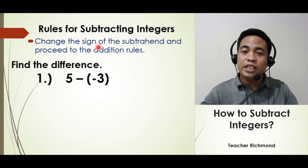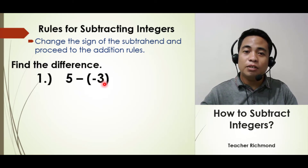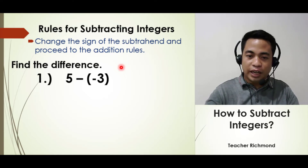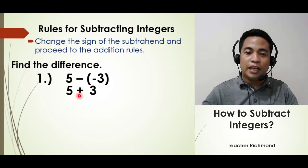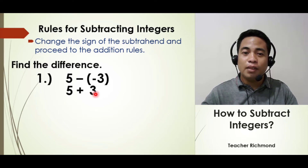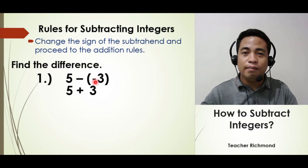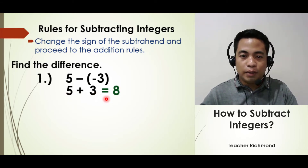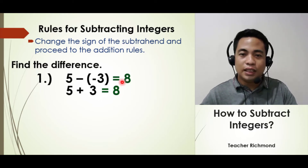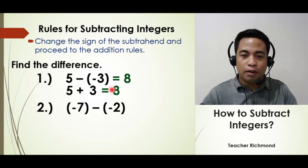Let's have an example — find the difference. Take 5 minus negative 3. Based on our rule, simply change the sign of the subtrahend. The subtrahend is negative 3, so you change its sign to positive and proceed to the addition rules. It becomes 5 plus positive 3. The answer is 5 plus 3, which equals positive 8. Therefore the answer of 5 minus negative 3 is positive 8.